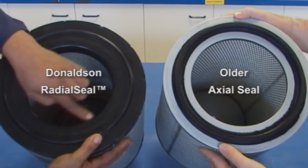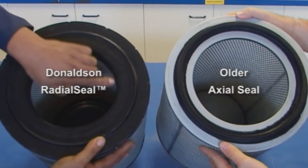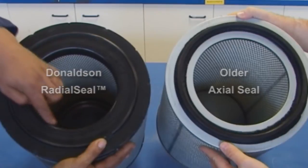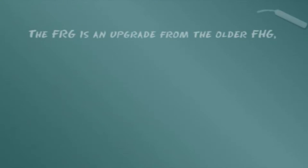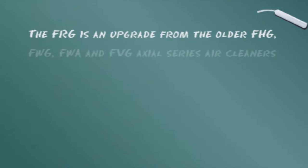The FRG is an air cleaner family which features the newer, more efficient Donaldson radial seal design. This is an upgrade from the older FHG, FWG, FWA, and FVG axial seal series.